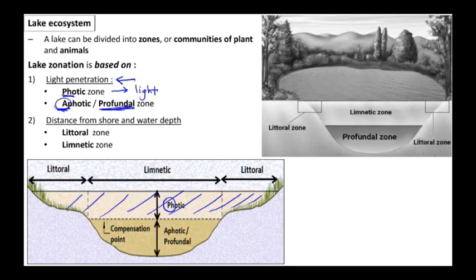This explains why when it goes deeper, the color of the lake becomes darker, because the light simply cannot reach the aphotic or the profundal zone. And this zone is a deeper part of the lake.